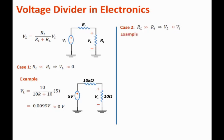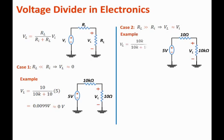Let us show that through an example. We have the input resistance as 10 ohms and the load resistance as 10 kilohms. Using the voltage divider equation, VL = 10k over (10k + 10) times 5, which equals 4.95 volts. So we can approximate this value to say it is approximately equal to VI, which is 5 volts.